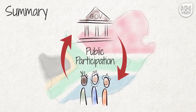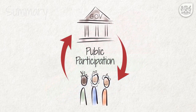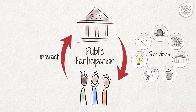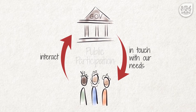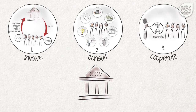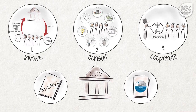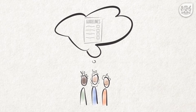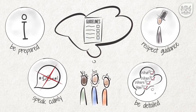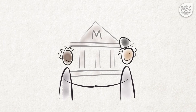Summary: In this video, we explained the role of public participation in our democracy. Public participation enables us to interact with our elected government on an ongoing basis on matters that concern us. Through public participation, government remains in touch with our needs and we can hold government accountable. Our constitution and laws spell out what government has to do to facilitate public participation in important municipal decision-making processes, such as the drafting of bylaws or the IDP. In order to participate in municipal processes successfully, we need to conduct ourselves in an appropriate and constructive manner in public meetings. This will help us to develop good working relationships with our municipality.